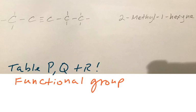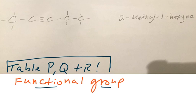Guys, you've got to get your reference table, and specifically we're going to look at tables P, Q, and R. I want to give you this definition: a functional group is an atom, it could be a group of atoms, or it could be bonds which give a compound its identity.